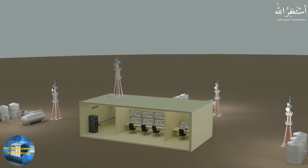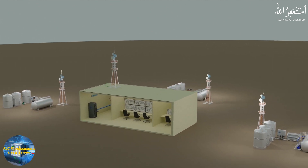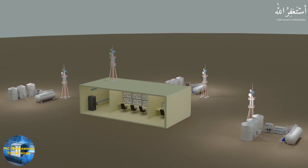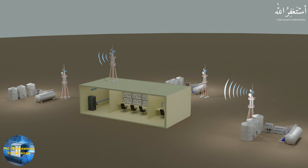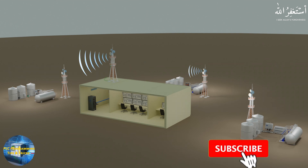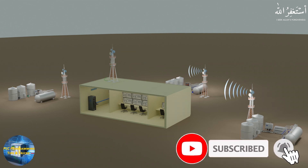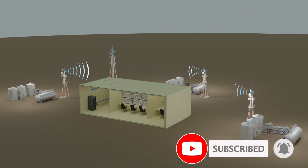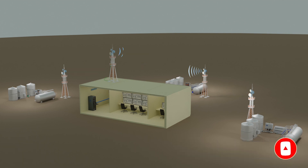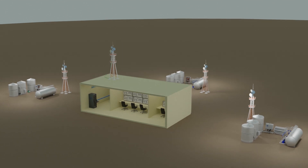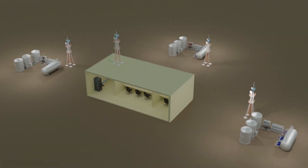A SCADA system is capable of handling, monitoring, and controlling processes being carried out simultaneously at several locations at a time. I hope you liked today's tutorial. Please do share, like, and subscribe to this channel. Till next video, take care and goodbye.